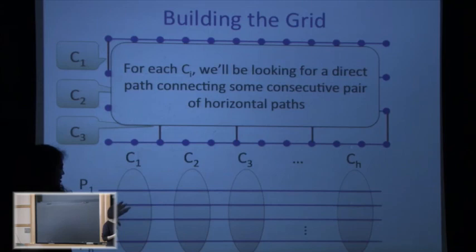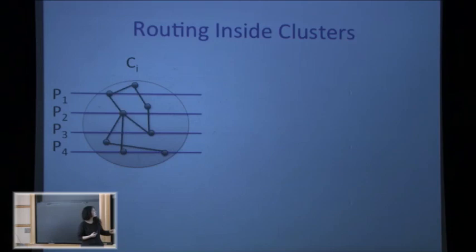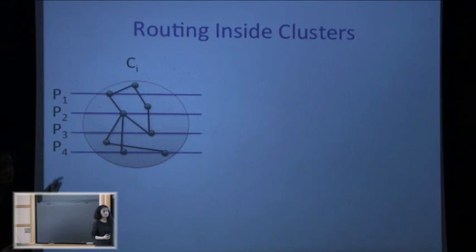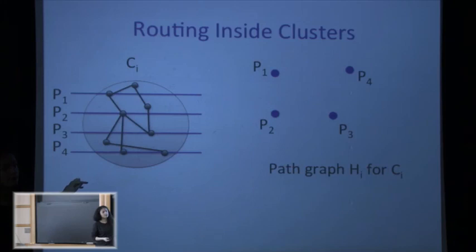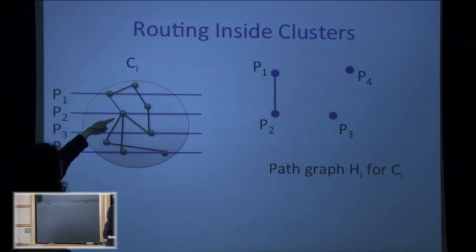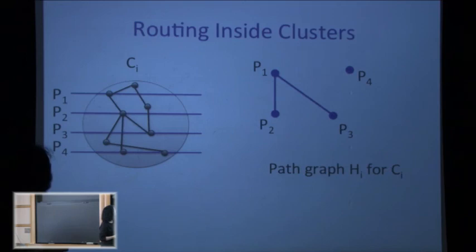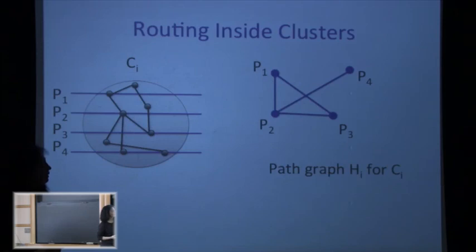Inside each cluster we try to connect some pair of horizontal paths directly. We represent this by a graph: a vertex for each horizontal path, and an edge between two vertices if and only if we can connect the corresponding paths by a direct path that doesn't stop at any other horizontal path. For example, p_1 and p_2 can be connected directly so we put an edge; p_1 and p_3 can also be connected directly; but p_1 and p_4 cannot, so no edge. This graph is connected.